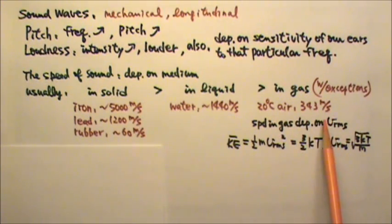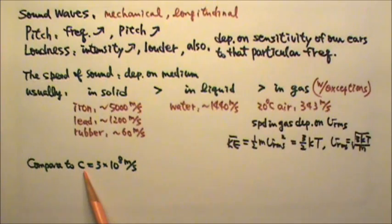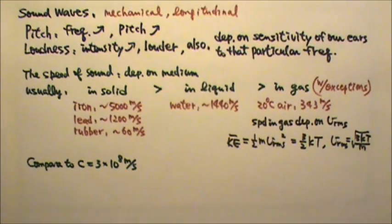This speed is much, much slower than C, the speed of light in vacuum. The speed of light in air is about the same as C. What observations do you have that tells you light travels much faster than sound does?